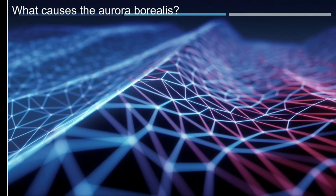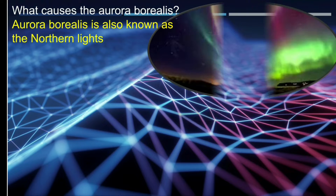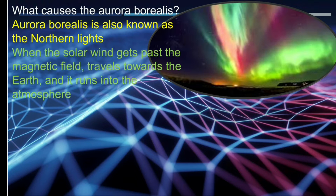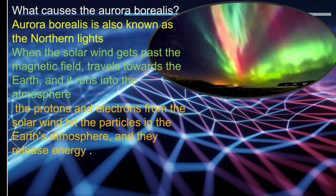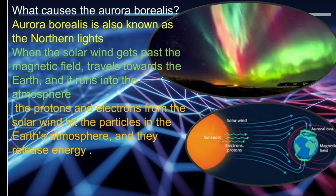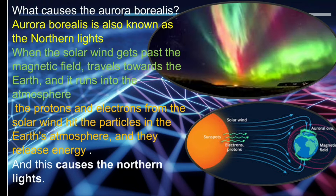An example of the electromagnetic force present around us is the aurora borealis, also known as the northern lights. When the solar wind gets past the magnetic field and travels towards the Earth, it runs into the atmosphere. The protons and electrons from the solar wind hit particles in the Earth's atmosphere, and then they release energy. This energy is visible in a colorful form — you can see how solar wind interacts with Earth's magnetic field to produce this spectacular scenery.